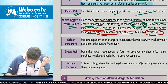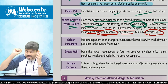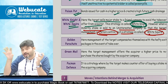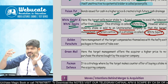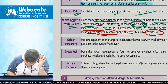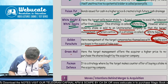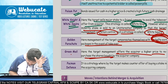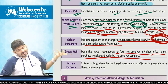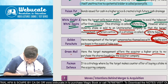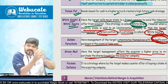Then is Golden Parachute — the target company makes an agreement that if any acquirer comes, the management will get a hefty compensation, say 100 crores. You are giving yourself a golden parachute — if somebody acquires you, you will still fly. The management of the target compensates themselves with a hefty exit package in the event of a takeover. Almost similar is Greenmail — the target management offers the acquirer a higher price to repurchase the shares bought by the acquirer company.